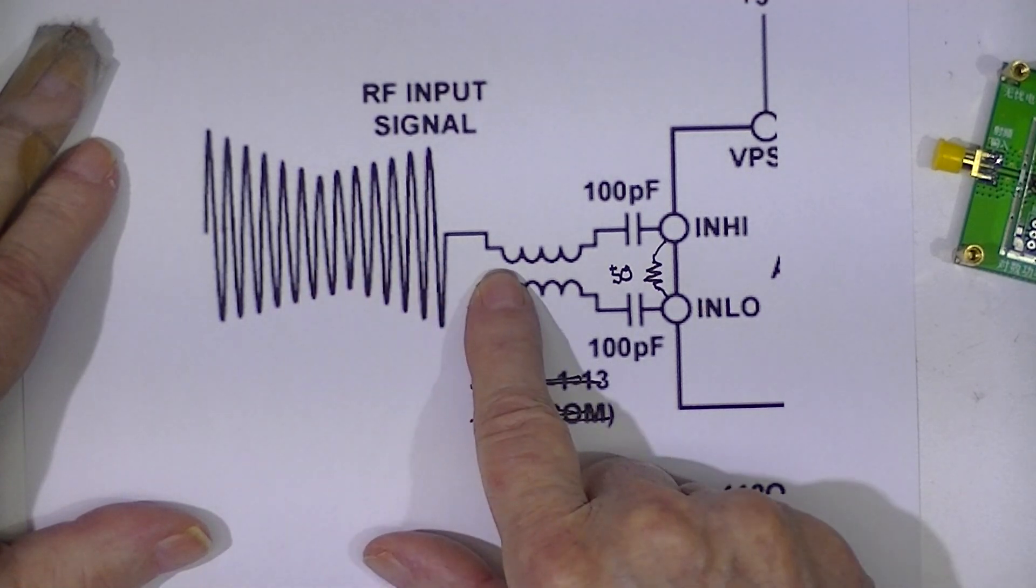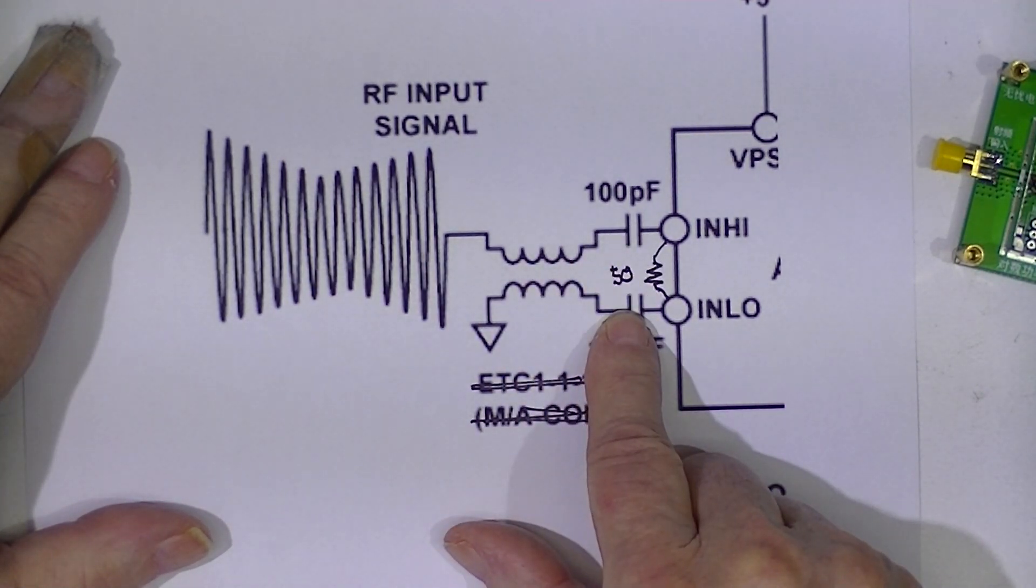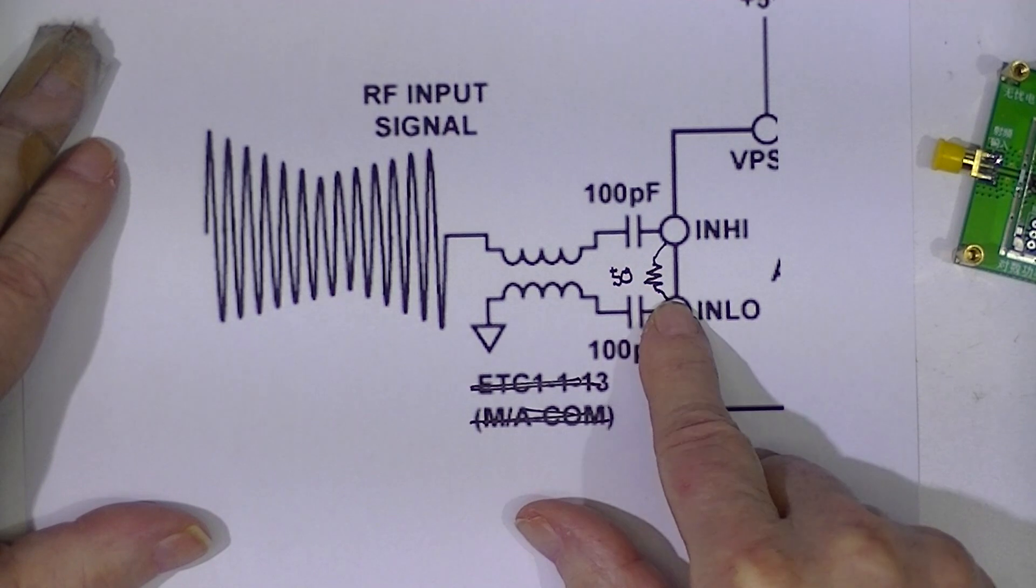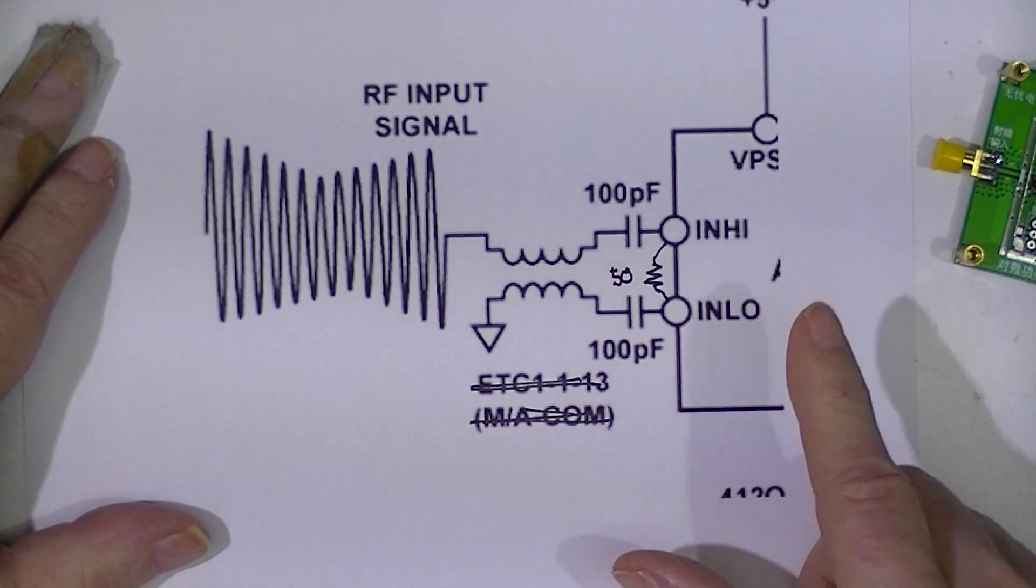And at the same time, the 50 ohm resistor provides a termination. So that when I look in here, not with the DC meter because that's stopped by these two capacitors, but if I look in here, I probably see something that resembles 50 ohms input.